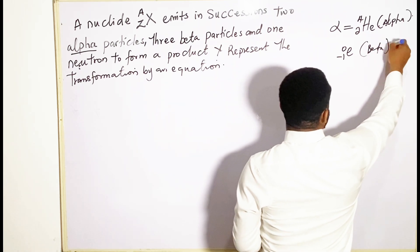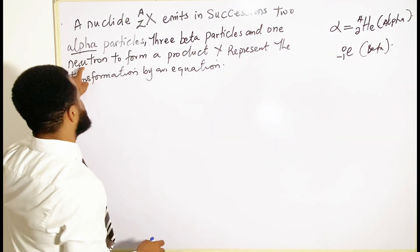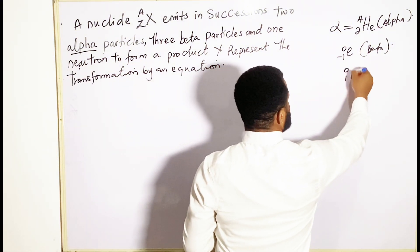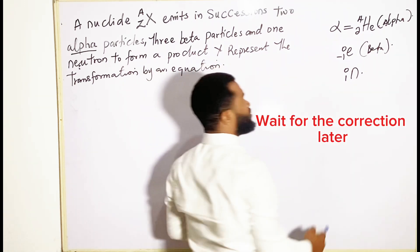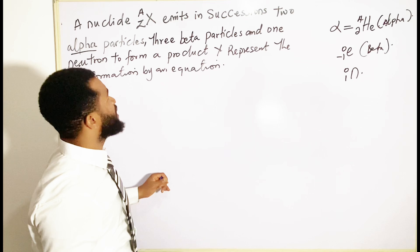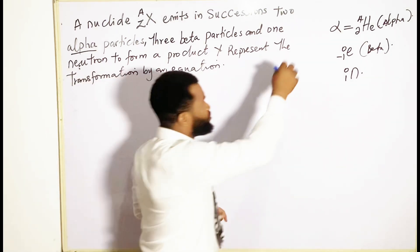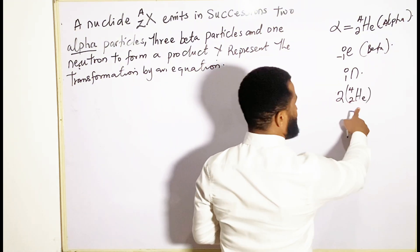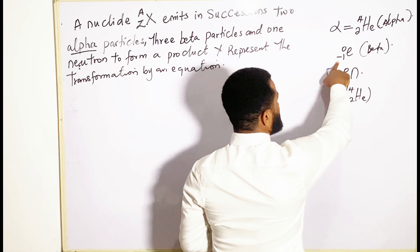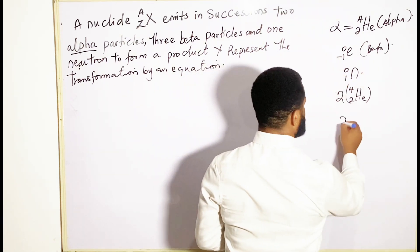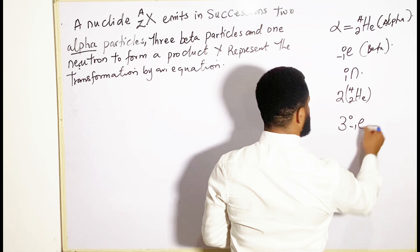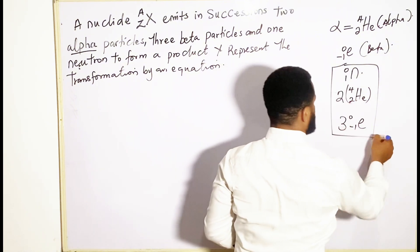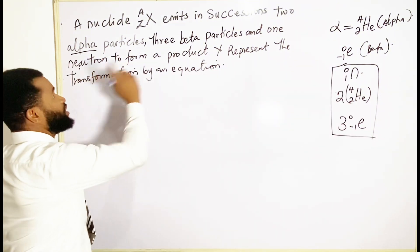Then we have beta, which is ⁰₋₁e — that is the electron. We also have the neutron, which is written as ¹₀n. So two alpha particles is 2·⁴₂He, three beta particles is 3·⁰₋₁e, and then we have the neutron. These three parameters are what we will use in solving this question.